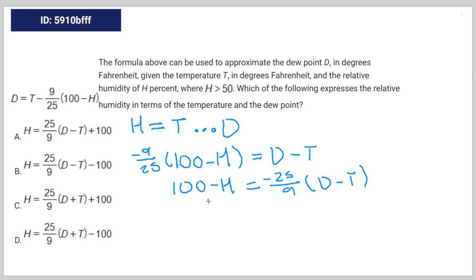And then subtract both sides of the equation by 100. You're going to get negative H is equal to negative 25 over 9 times D minus T minus 100.